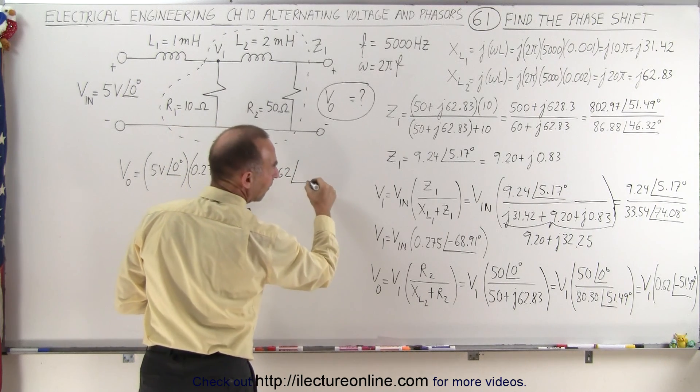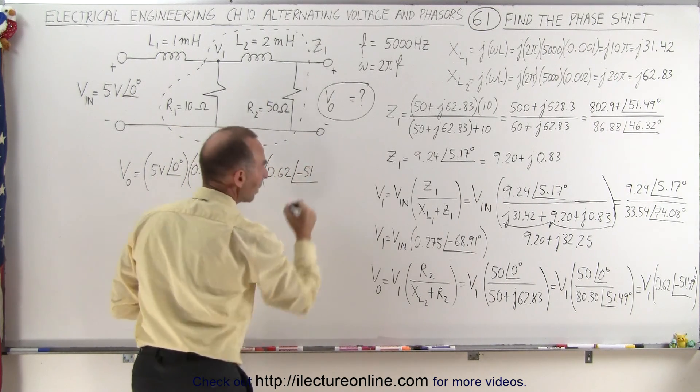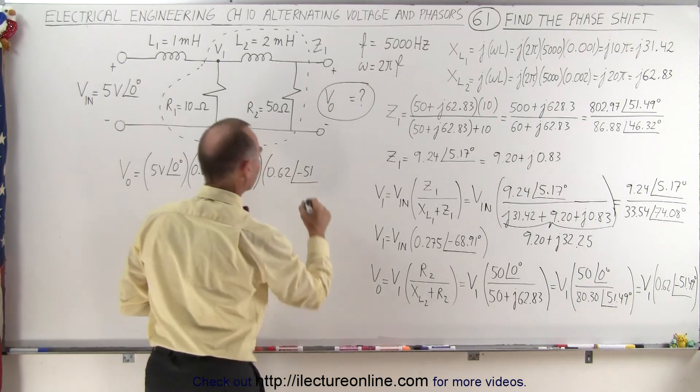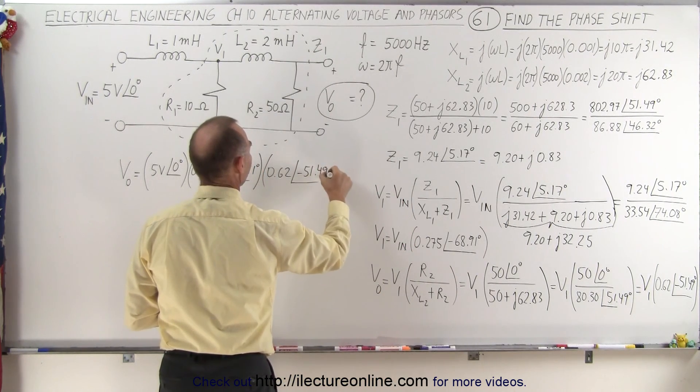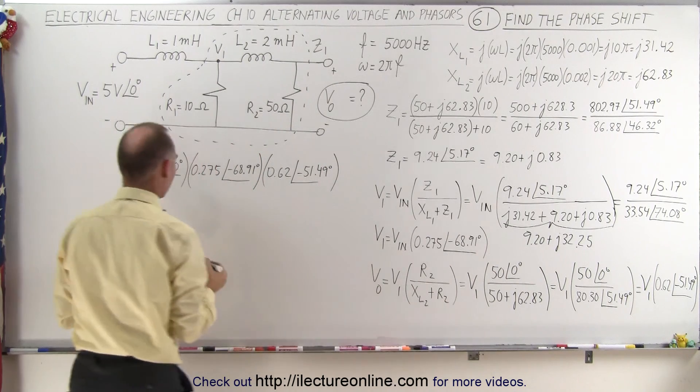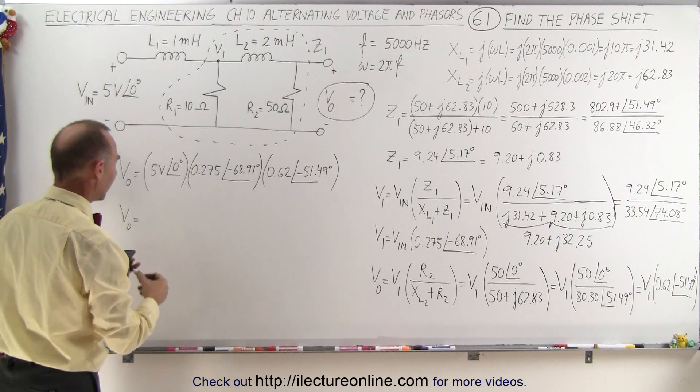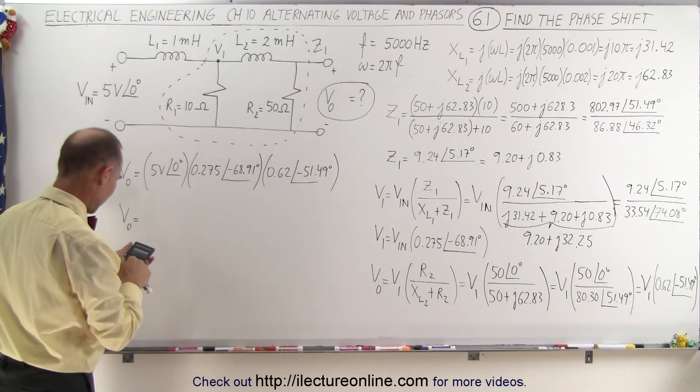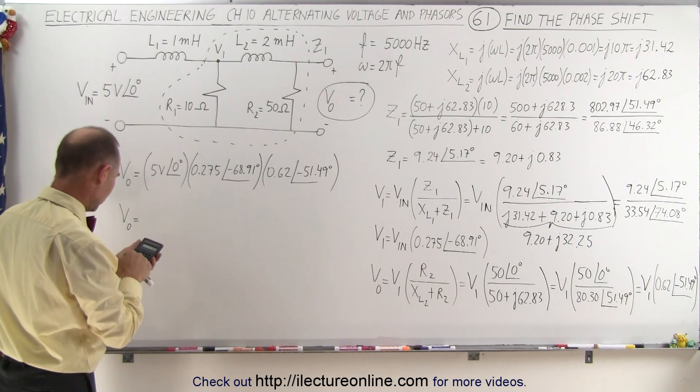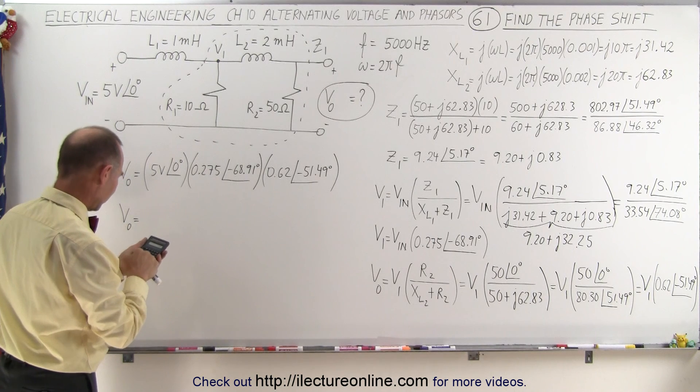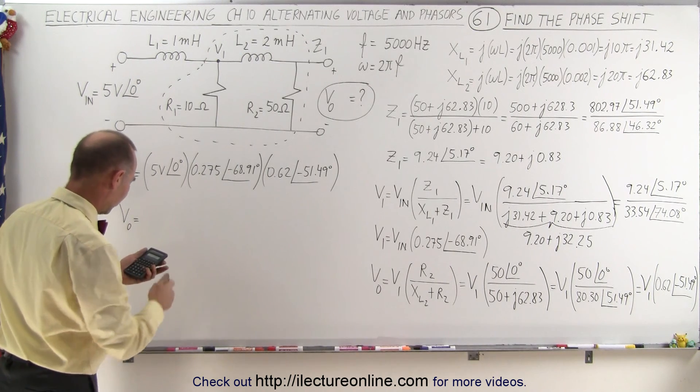So now, to get the result, the output equals, we multiply all these together. We have 5 times 0.275 times 0.62, that gives us 0.85.